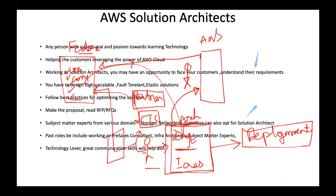A participant asks: I'm an automation testing engineer — is this useful for me? The answer is yes — it's not only for data storage and database teams. Anyone can learn AWS architecture. All those points will be discussed in the upcoming slides. This is one part of the domain — architecture. Next, we'll hear about deployment.